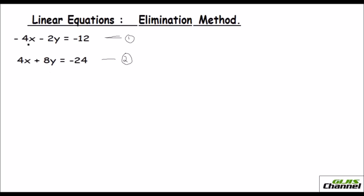Looking at these two equations, you can see that x has the same coefficient: it is 4x in both equations. One is positive and the other is negative, so we can directly add these two equations. The minus 4x and plus 4x will cancel out to zero.